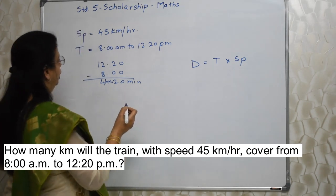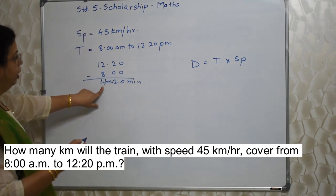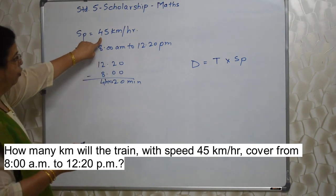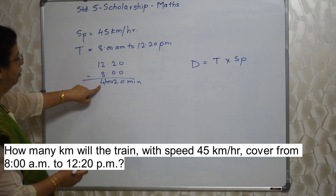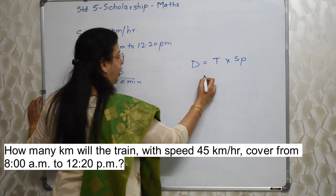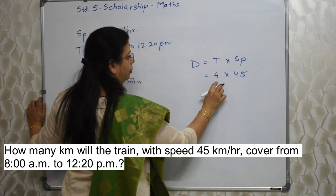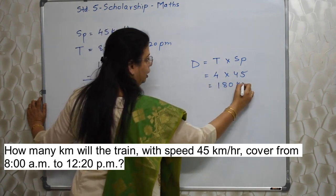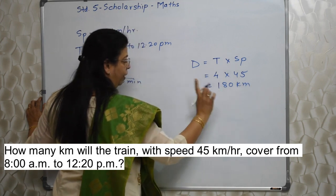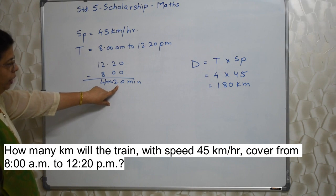So in 4 hours, how much distance will it cover? If in 1 hour it can cover 45 kilometers, in 4 hours how much distance will it cover? 4 hours into 45 — time into speed — that is 180 kilometers. But this is not our final answer, because we still need to find out how much distance it will cover in 20 minutes.